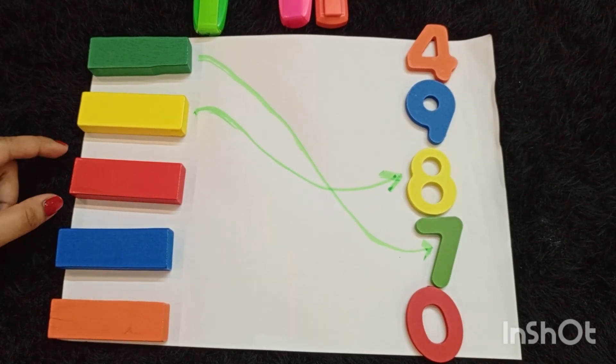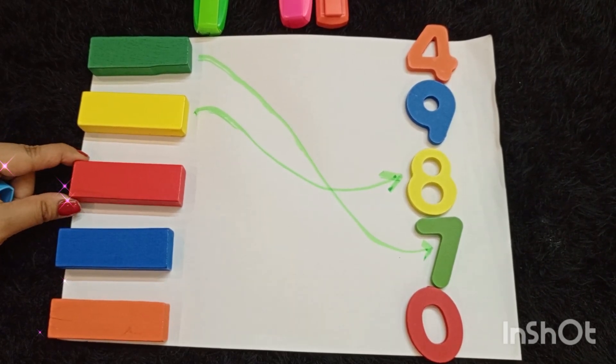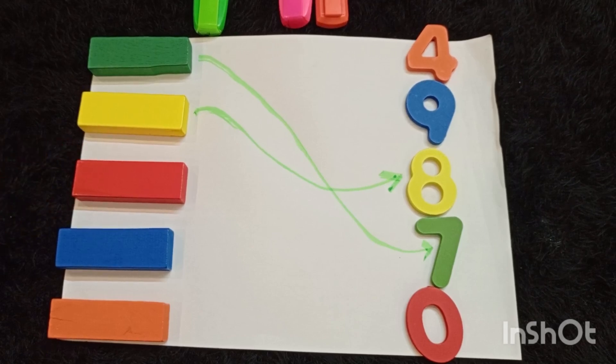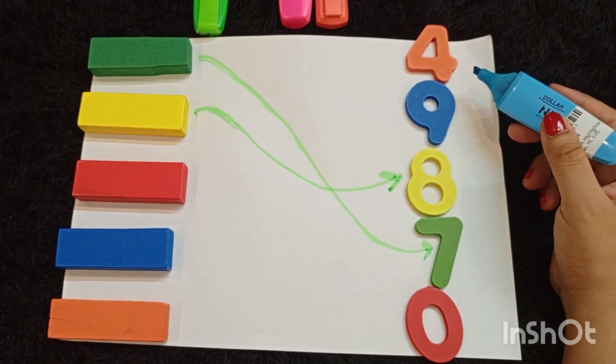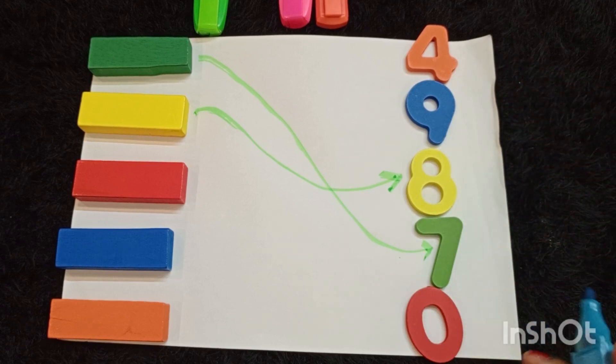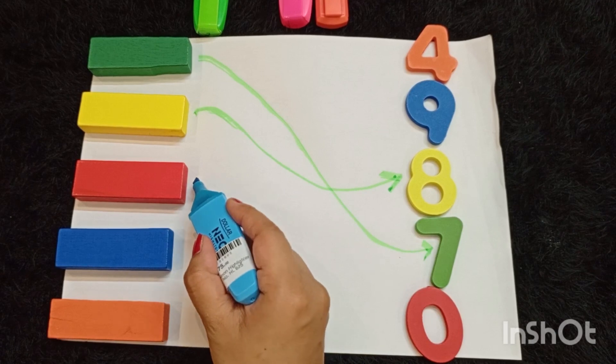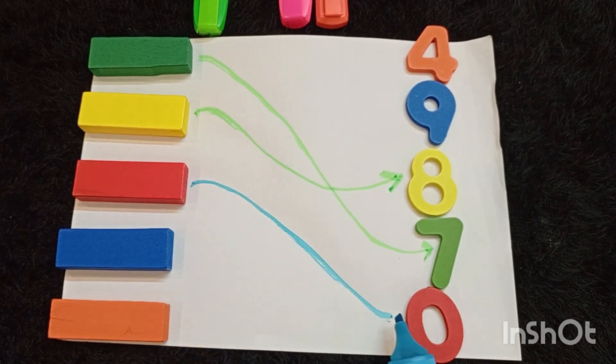Now we have another block which is red in color. Which number is in red color? The color of 0 is red, so we are going to match the red block with 0.